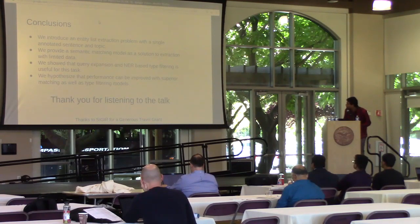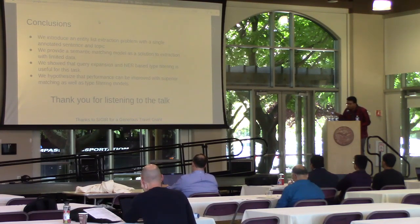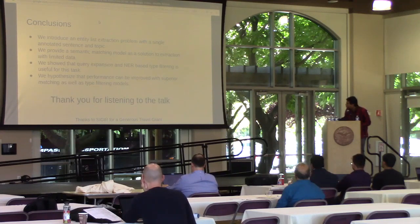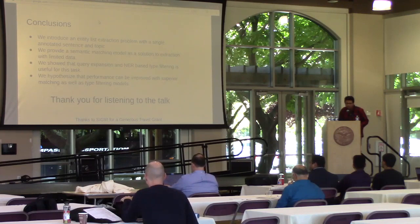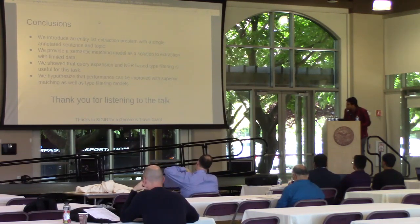In conclusion, we introduced an entity list extraction problem with a single annotated sentence in the topic. We provided a semantic matching model, which we will discuss at the poster if you'd like. We showed that query expansion and NER-based filtering is useful for this task. We also noted that performance can be improved with superior matching models and better filtering models. We showed that for entity list extraction, retrieval works better with limited data. Thank you for listening, and thanks to SIGIR for a generous travel grant.